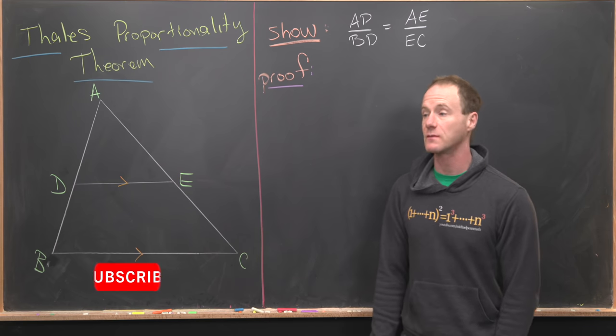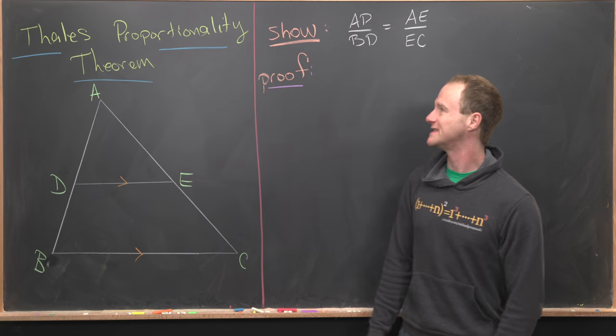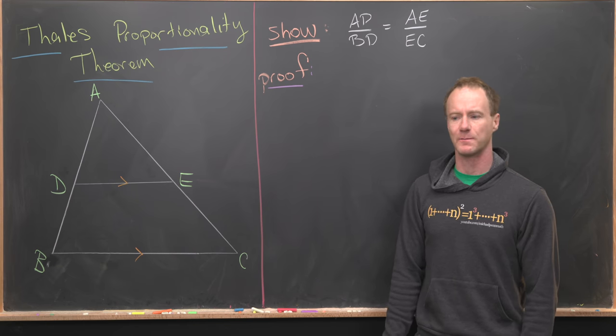Here we're going to look at what I think is a pretty streamlined proof of a very classic geometry problem. This is Thales' proportionality theorem.